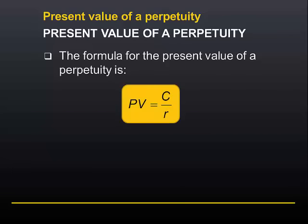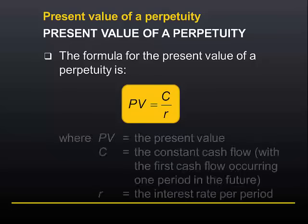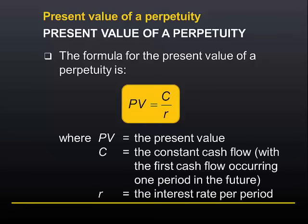The formula for the present value of a perpetuity is probably the simplest formula that we will use in this entire subject. The present value of a perpetuity is just the constant cash flow divided by the interest rate.